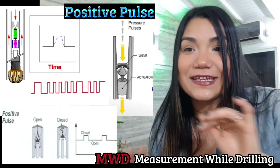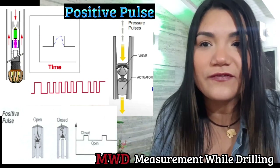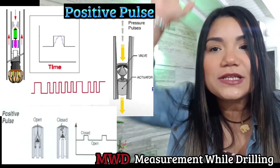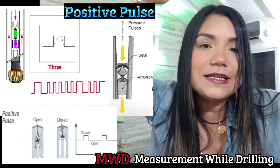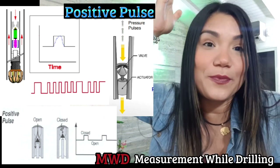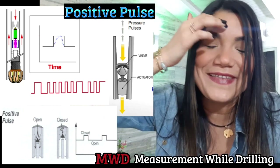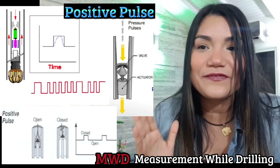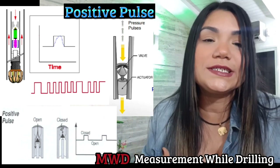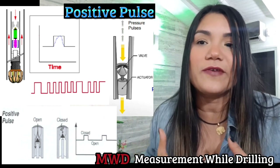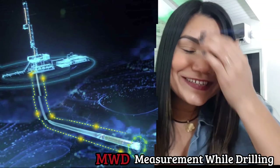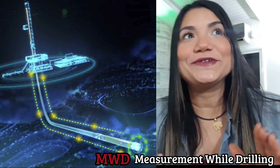This generated pulse wave travels back to the surface and is detected by a decoder pressure sensor. This technique is used for telemetry systems which require a slow rate of data transmission.